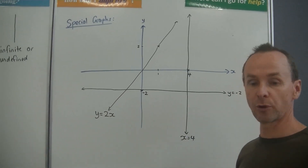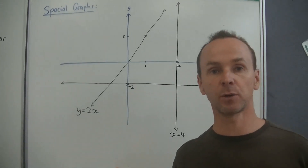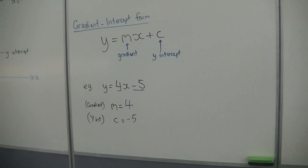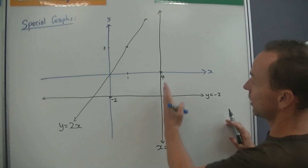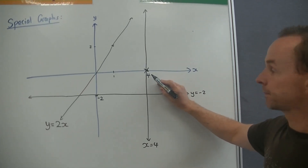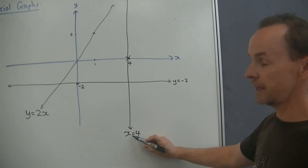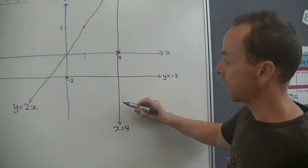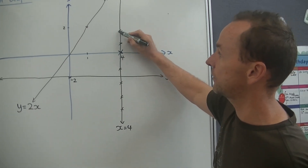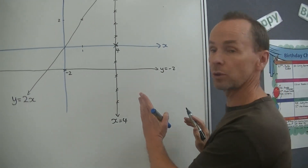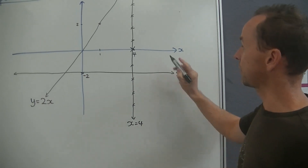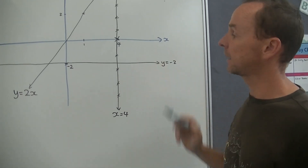Let's do some special graphs. Special graphs are generally vertical lines or horizontal lines — they're not in the same form as y equals mx plus c. So if you look at this vertical line only, it cuts the x-axis at x equals 4. So the equation of that line is simply x equals 4. Because every point on that line, the x value is 4 — it doesn't matter what the y value is. So a vertical line is just x equals 4. If it went through the x-axis at 6, it would be x equals 6. Easy peasy.